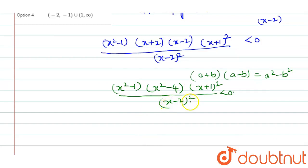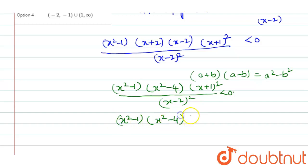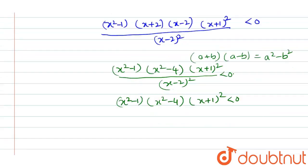The denominator (x - 2)² goes to the other side, and since (x - 2)² is always non-negative, multiplying does not change the inequality sign. So (x² - 1)(x² - 4)(x + 1)² is less than 0, and since (x + 1)² ≥ 0, we focus on (x² - 1)(x² - 4) less than 0.